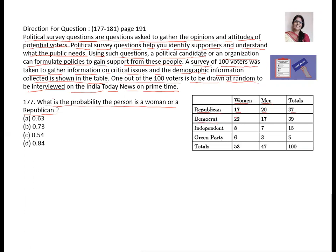Democrat women: 22, Democrat men: 17. Independent women: 8, independent men: 7. Green party women: 6, green party men: 3, green party total: 5. Total women: 53, total voters: 100.